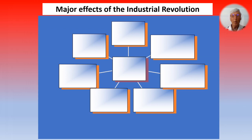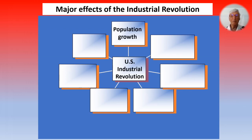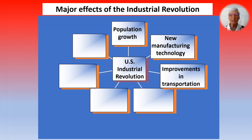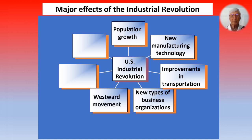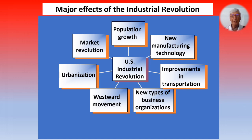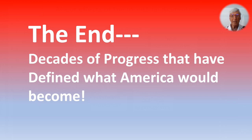What were the major effects of the Industrial Revolution? First, there was significant population growth — the United States was expanding dramatically. There was new manufacturing technology and inventiveness, improvements in transportation with canals, railroads, and clipper ships, and new types of business organizations such as the corporation. America began to move west in large numbers to populate the Great Plains. There was urbanization — people leaving the farms and moving to the cities — and a market revolution during this period. It was a significant time of major change that provided decades of progress defining what America would become as a nation.